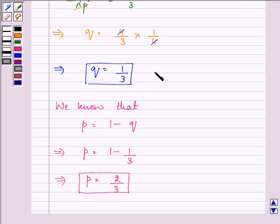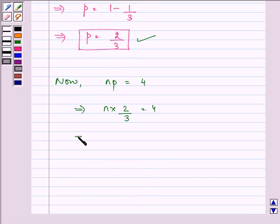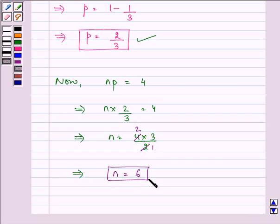Now we have the value of q as well as p, so we can find out the value of n. We know that mean, that is n into p, is equal to 4. This implies n into 2 by 3 is equal to 4. So this further means n is equal to 4 into 3 by 2, which gives us the value of n as 6.